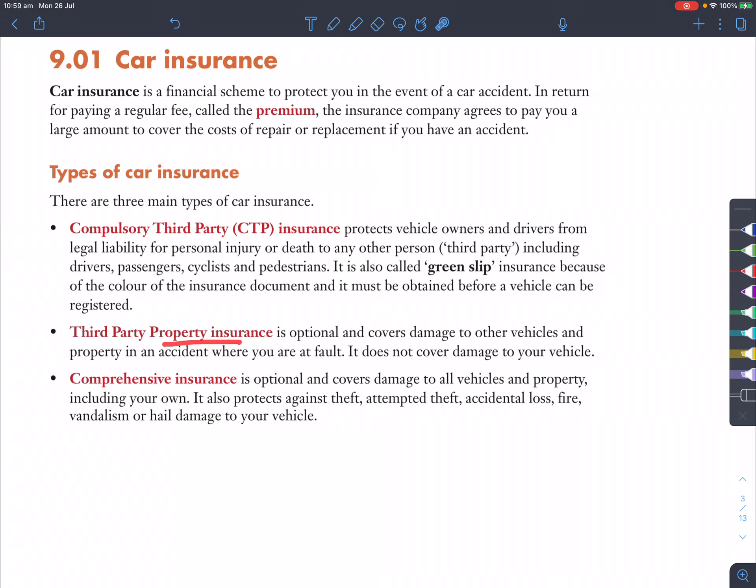Secondly, third-party property insurance. This is an optional payment and it covers damage to other vehicles and property in an accident where you are at fault. So it does not cover damage to your vehicle. This one here is covering medical expenses. This one here is covering the damage you've done to someone's car. And I would recommend at least having this because if you crash someone's car and let's just say it was a very expensive car, then you have to pay a huge amount.